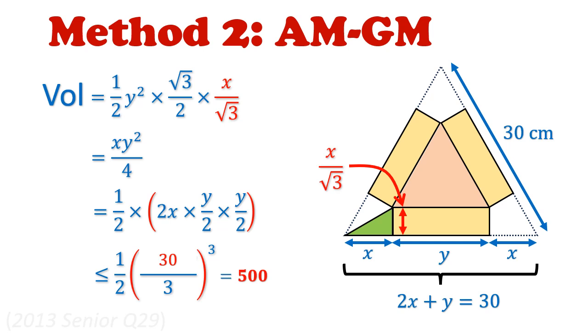Now it's always a good practice here to check for the validity of this upper bound by checking for the case of AM equals GM. This occurs when the three terms are equal. So you should always check whether 2x can be equal to y over 2. This is left as an exercise to the reader.